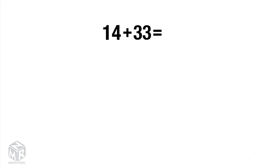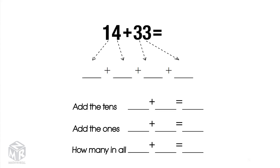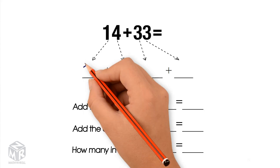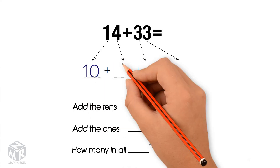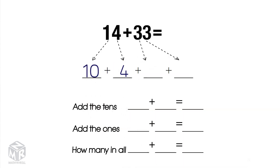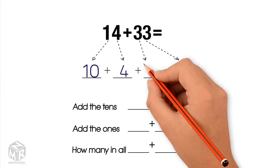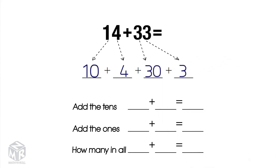Let's try another example: 14 plus 33. We break apart 14 into 10 and 4. Next, we break apart 33 into 30 and 3. Now we add the tens: 10 plus 30 equals 40.